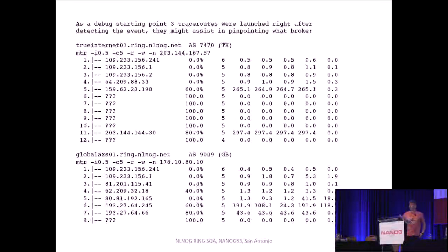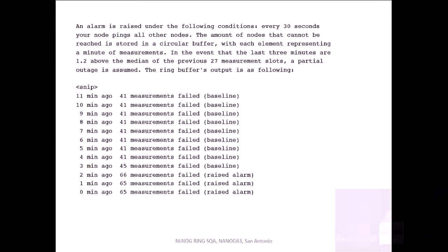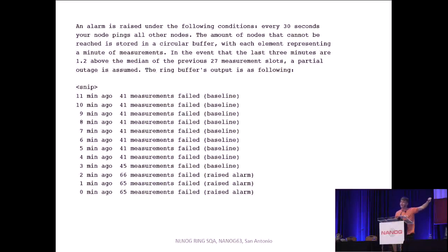The traceroutes are included in the alert. These traceroutes all have a certain provider in common that had the actual outage. But the traceroutes are a guess — the system is not as smart as you engineers. At the end of the email, you will see the ring buffer. 30 minutes of measurements are stored in a circular buffer. The last three minutes are compared to the 27 minutes before that, and from that you might derive something useful as a human being.